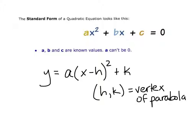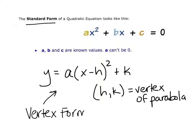So we have standard form up top, and this is what we call vertex form. For right now, I would be presenting you with one or the other. We will learn how to move them back and forth between one another.